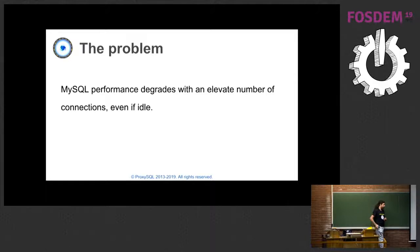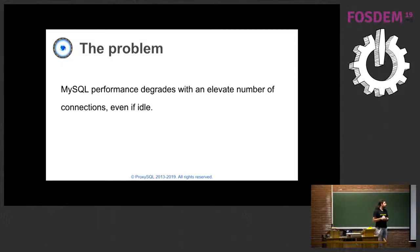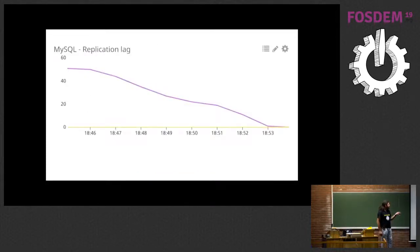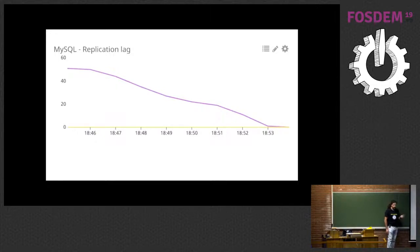The reason behind this is to try to solve one specific problem that is quite common in MySQL. In MySQL server, when you have a lot of client connections, performance tends to degrade very badly. The higher the number of connections - like 1,000 or 10,000 connections - performance drops drastically. Here we have graphs about one specific use case in which replication was lagging, and the only reason was because there were too many connections to that server.